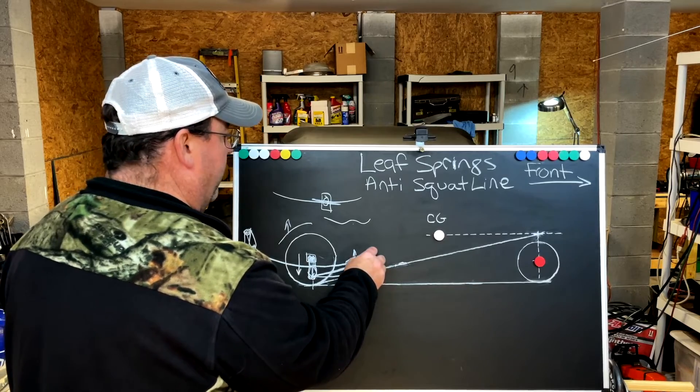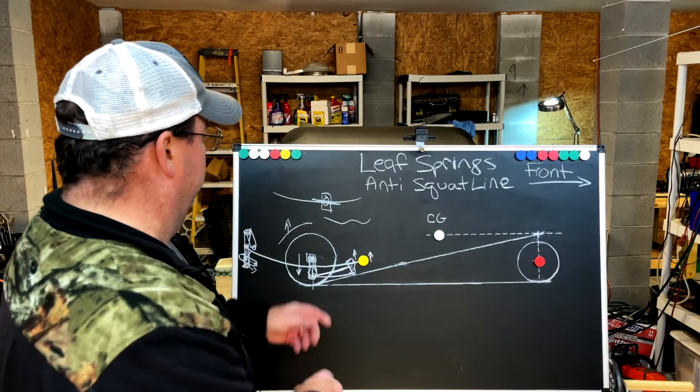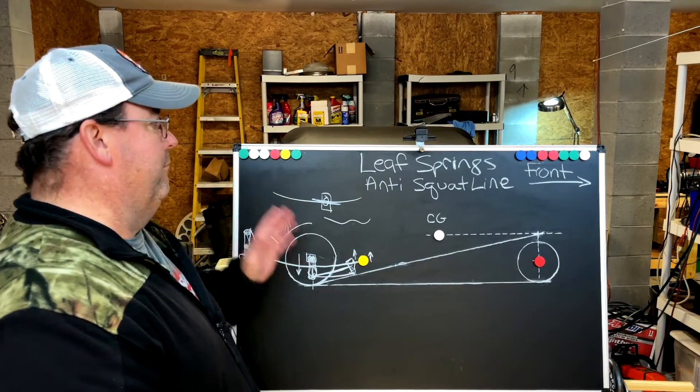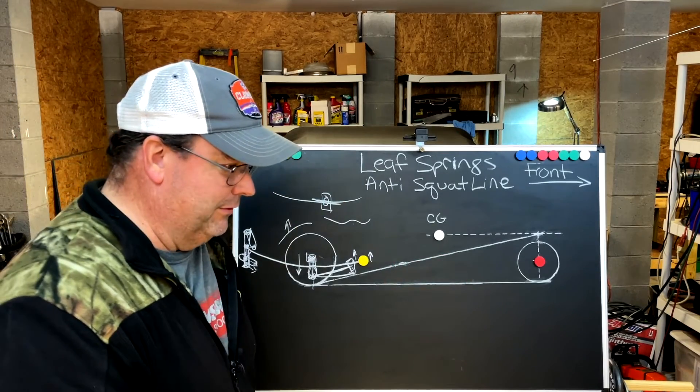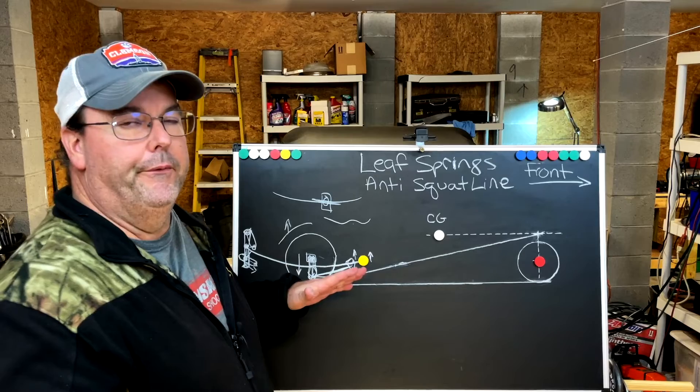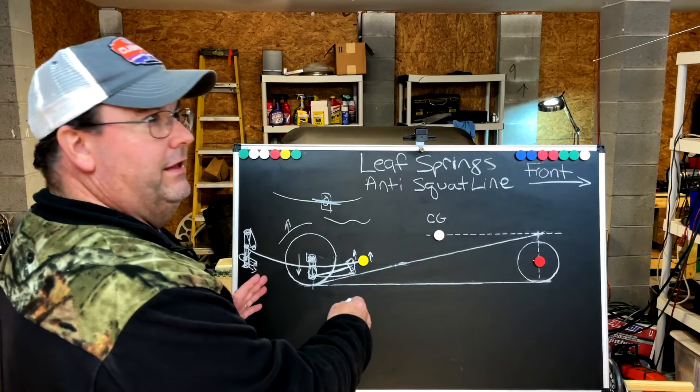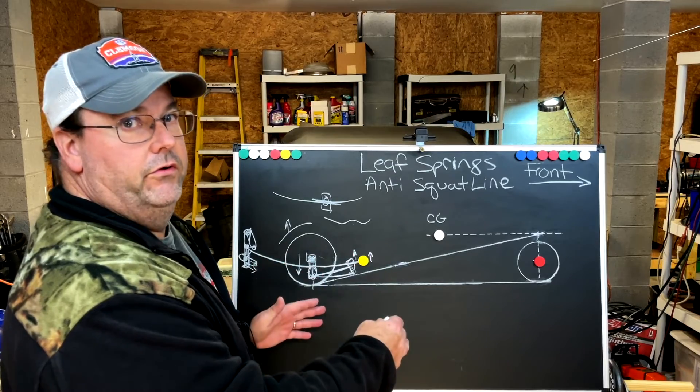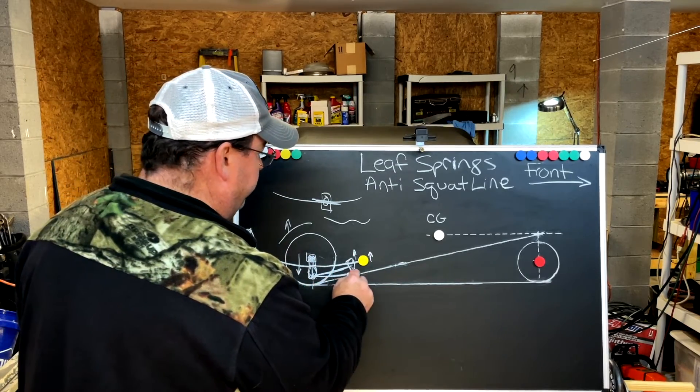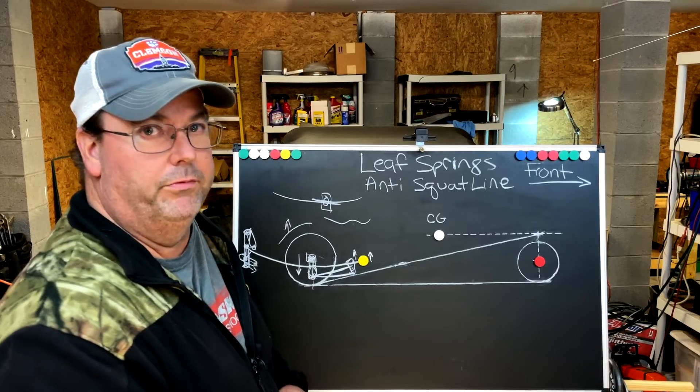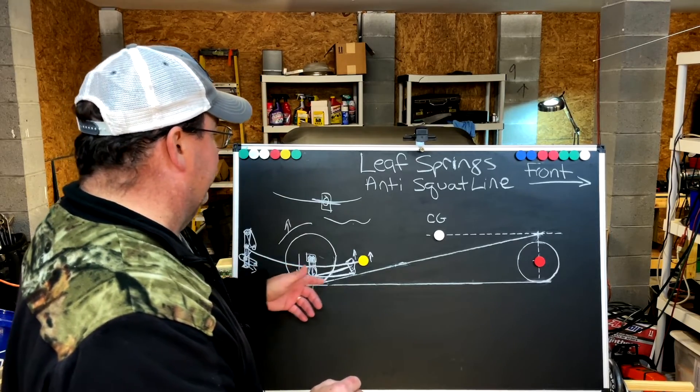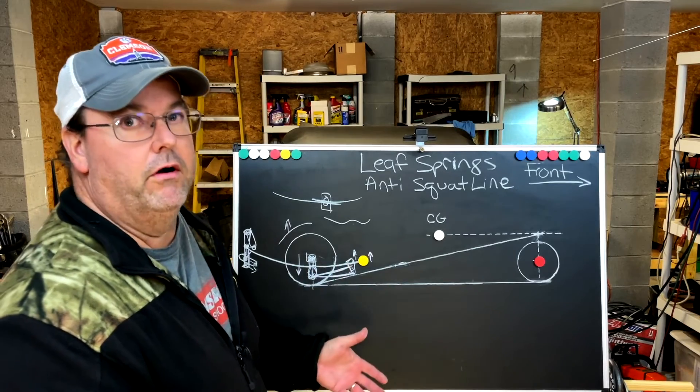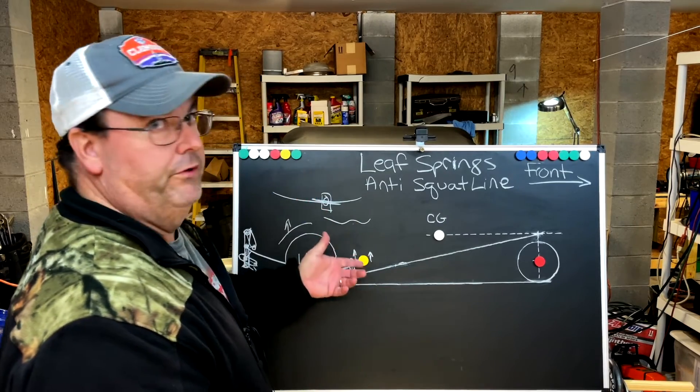Guys, that is how the leaf spring rear end relates to the anti-squat line. Simple as that. Can we make this more difficult? Absolutely. Do we need to? No. Just go with that theory. Try it. Video your car. Let the Caltrac bars help you or the Smith Assassin bars help you. But I do recommend some type of a Caltrac Smith Assassin bar to help control the spring wrap.